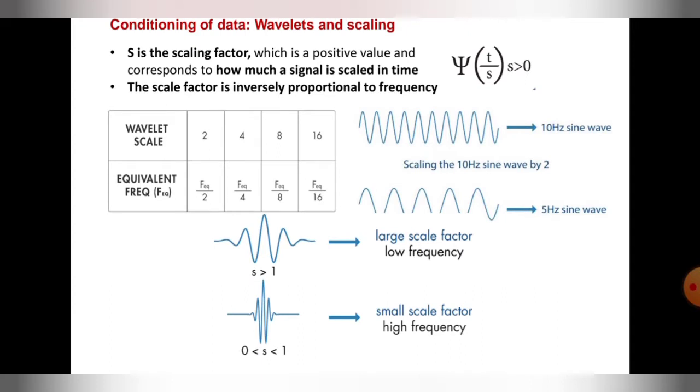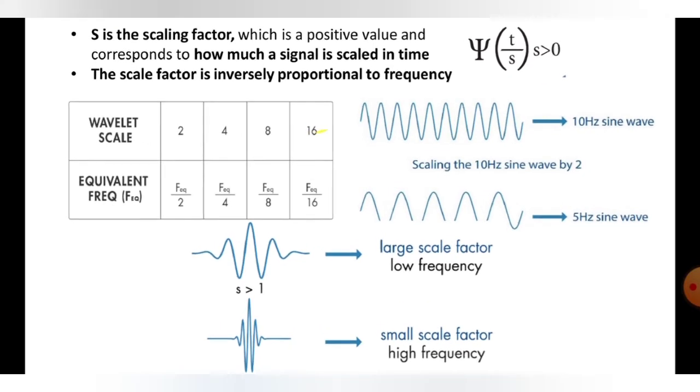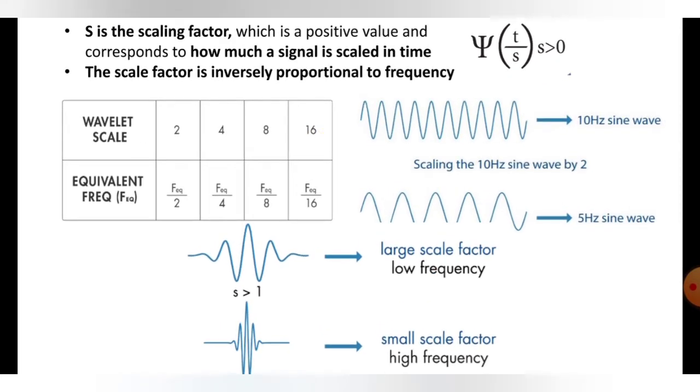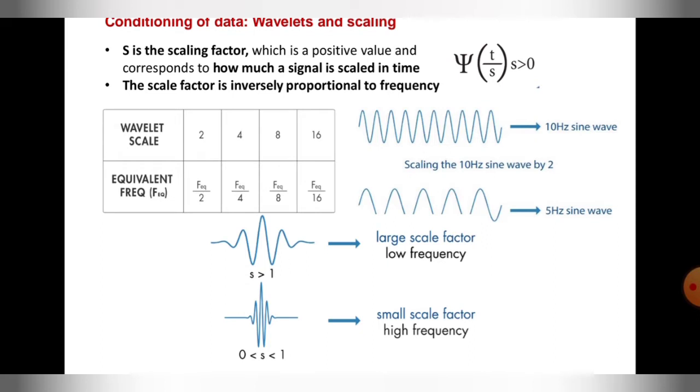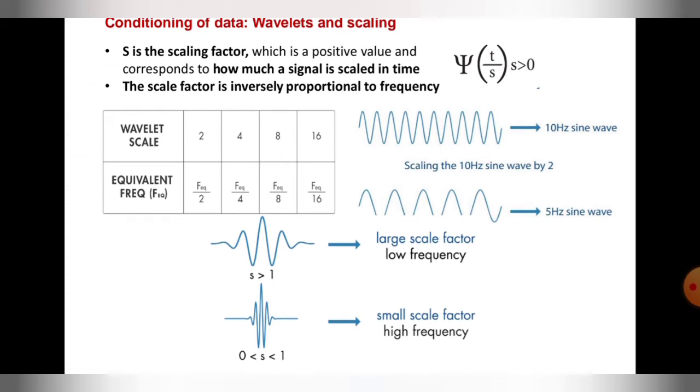The wavelet scale 2, 4, 8, 16 can be equivalent frequency with the equivalent frequency: frequency divided by 2, frequency divided by 4, frequency divided by 8, frequency divided by 16. The scaling in 10 Hertz sine wave can be seen here and the 5 Hertz sine wave can be seen here. Actually the negative cycle has been cut and it is digitalized.